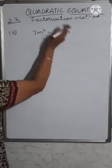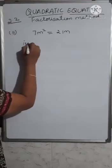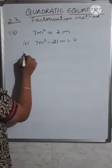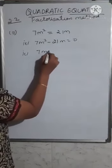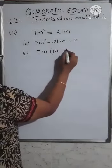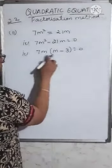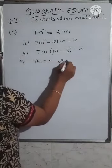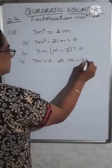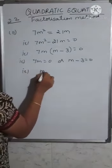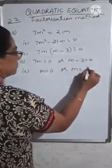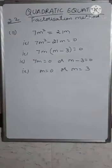Next: 7m² = 21m. Bring to one side: 7m² - 21m = 0. Take out 7m as common: 7m(m - 3) = 0. So 7m = 0 or m - 3 = 0, giving m = 0 or m = 3 as the roots of the equation.